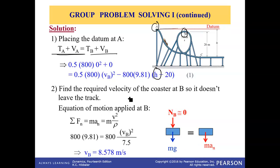So the next step is at B: find the required velocity of the coaster car at B so it doesn't leave the track. When the coaster car is just about to leave the track, the normal force is zero. So we assume that the normal force is zero.